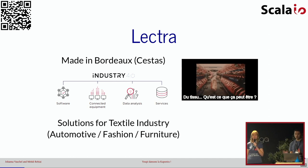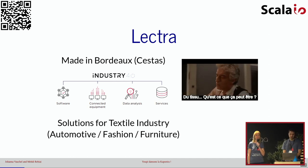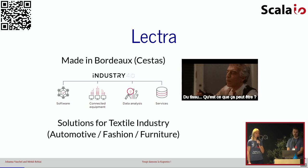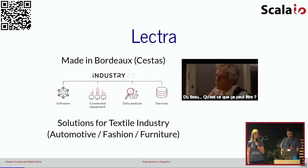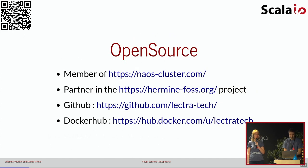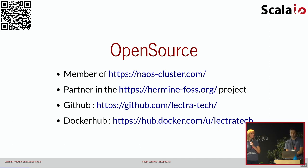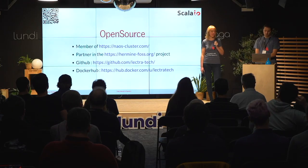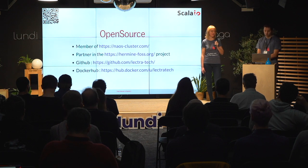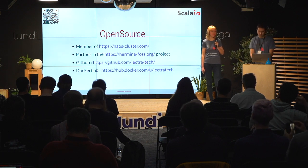On réalise des machines de découpe de tissus. Ces machines sont connectées et offrent de nombreux services. Les secteurs concernés par nos machines : l'ameublement, l'automobile et la mode. Par rapport à l'open source, Lectra s'est mis à l'open source récemment. On est membre du cluster Naos — Nouvelle Aquitaine Open Source. On est partenaire d'un projet open source Hermine, qui est un outil qui vérifie les licences open source. On a créé notre compte GitHub et Docker Hub récemment. Vous pourrez y retrouver le projet Capoeira.